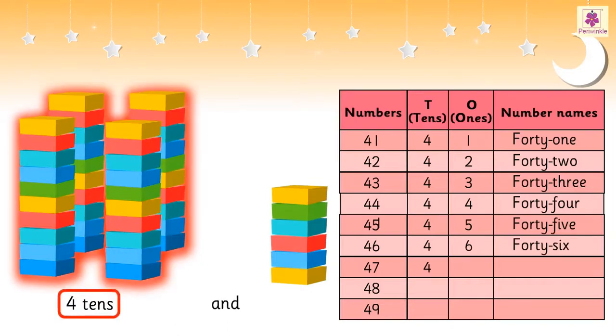Four Tens and Seven Ones is 47. Four Tens and Eight Ones is 48.